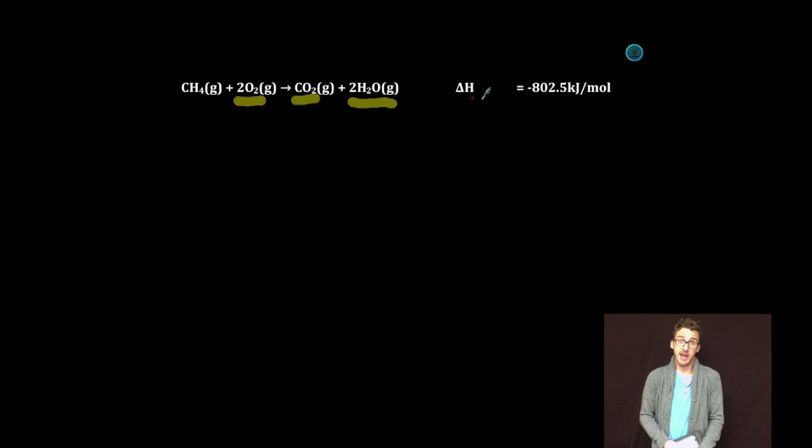Again, you'll see just delta H equals negative 802.5 kilojoules per mole. But if you want to be a little more specific, or sometimes they might throw in that this is an enthalpy of combustion, delta H comb. Recognize that again, it's just giving you a little more information specifying that we're talking about a combustion reaction.